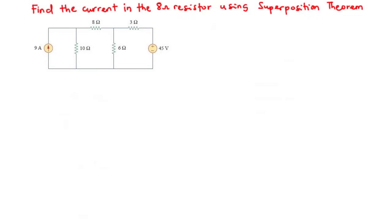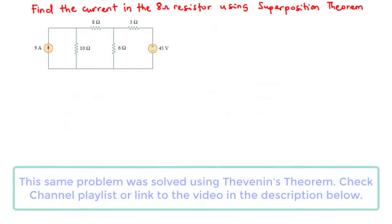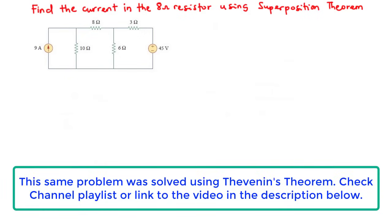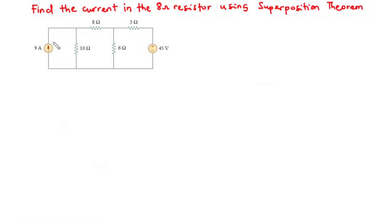In this video, we are going to solve circuit problems using superposition theorem. The idea behind superposition theorem is that, given a circuit which contains two or more sources, we can find the current through a particular resistor or the voltage across a resistor by considering each of the sources acting alone. For this circuit, we have a current source and a voltage source, and we are asked to find the current in the 8 ohms resistor using superposition theorem.